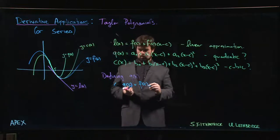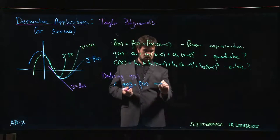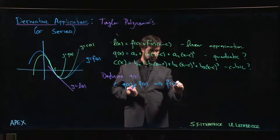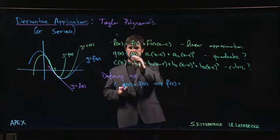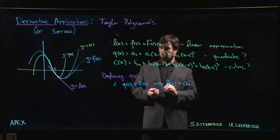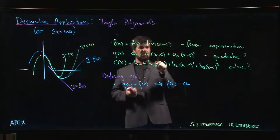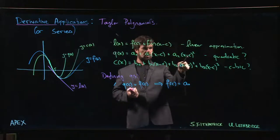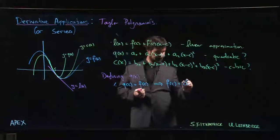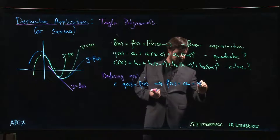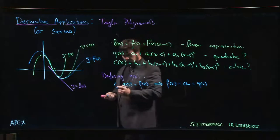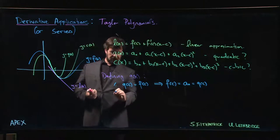Okay, so that means that F of c should be equal to a₀, because if I put x equals c in here I get zero, zero, right? So Q of c is just a₀. So now we know what a₀ should be. Okay, what's the next sort of reasonable thing that you might ask?